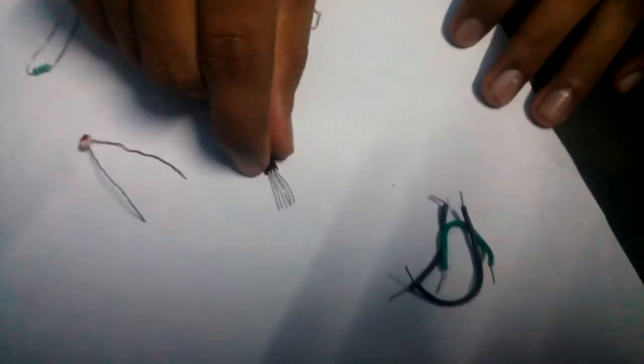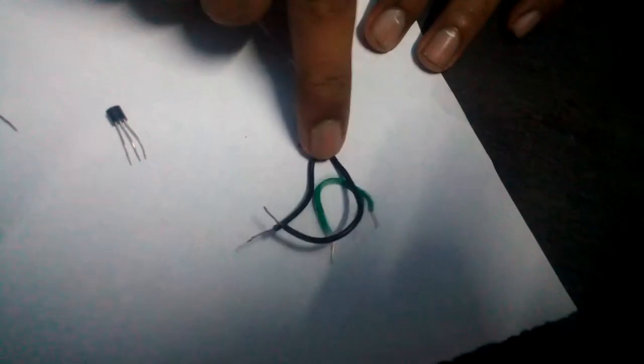This is the 6.8 ohm. This is the buzzer. This is the LDR. This is the NPN transistor. This is the 548 ohm. This is the connecting wires.